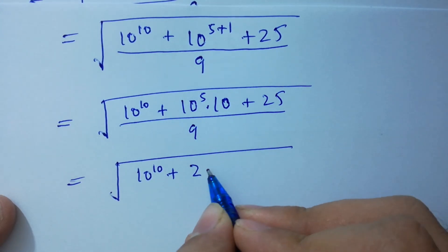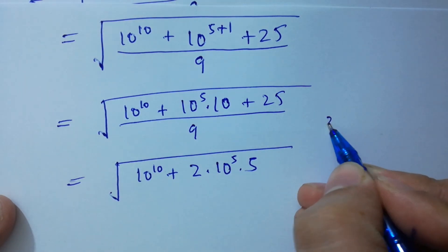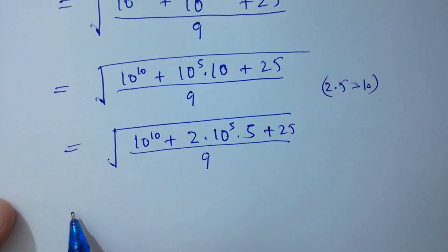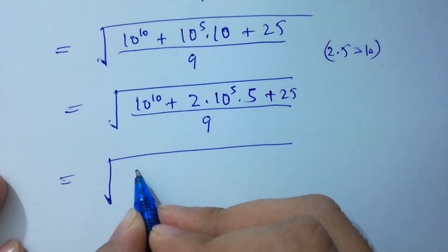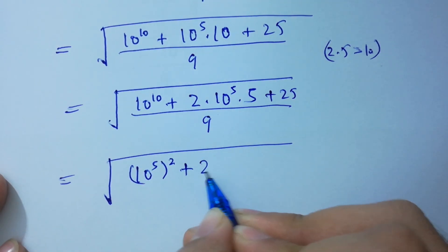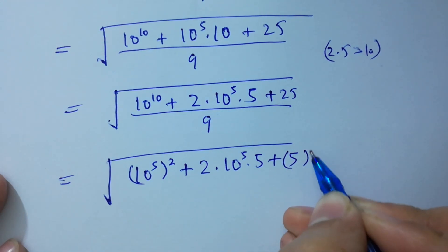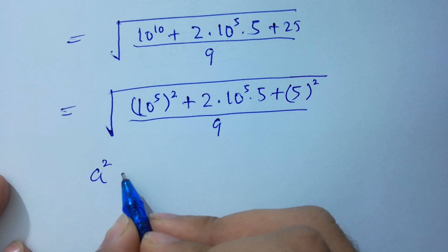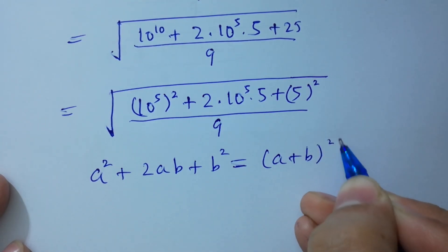Next step: 10 to the power 10 plus 10, 10 to the power 5 times 10 — which is 2 times 5, 10, 2 times 10 to the power 5 — as it is, times 5 times 5 is 2 times 5 is 10, and plus 25 as it is over 9. Next: this is the same as 10 to the power 5 times 10 to the power 5, times 5 — 25 is 5 squared — over 9 as it is.